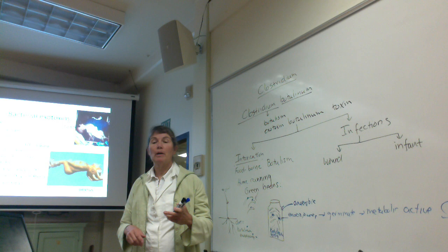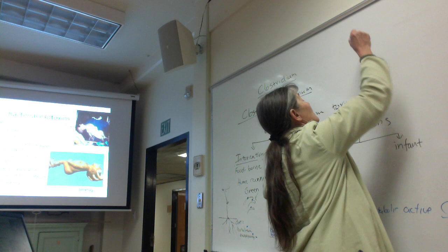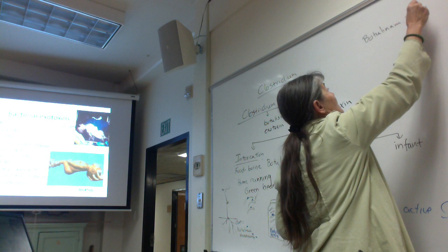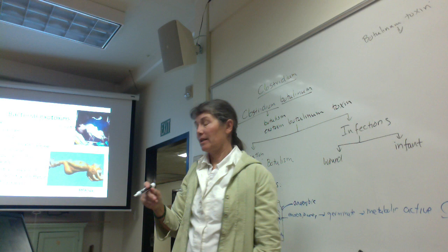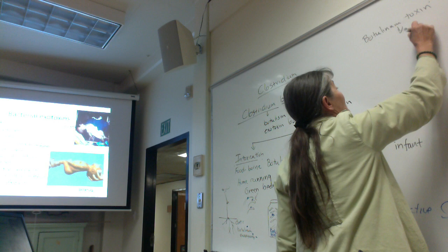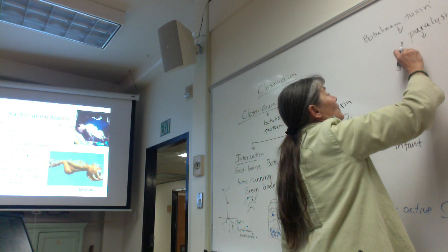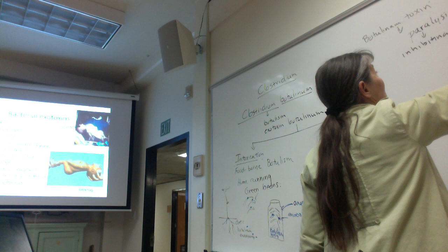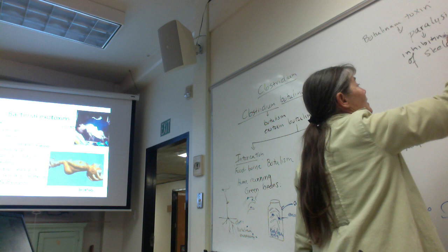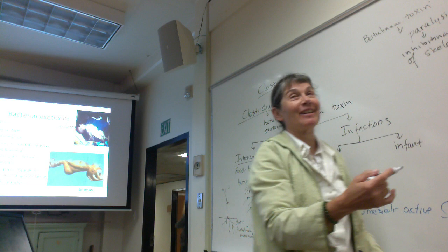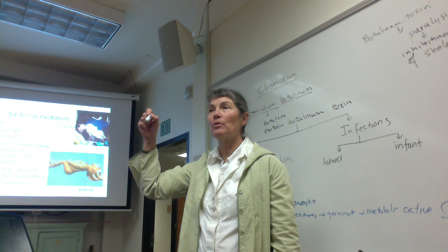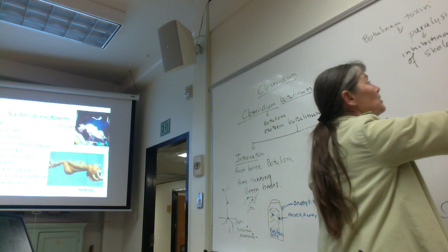Botulinum toxin causes flaccid paralysis by inhibiting contraction of skeletal muscles. To understand the mechanism, consider the neuromuscular junction where motor neurons innervate skeletal muscles. When you want to contract a muscle like your bicep, a nerve impulse — an action potential — travels down the motor neuron.